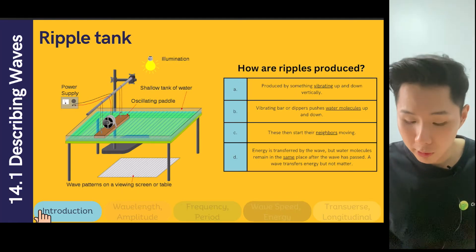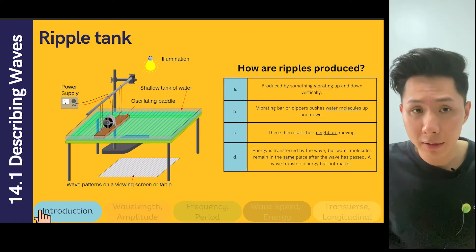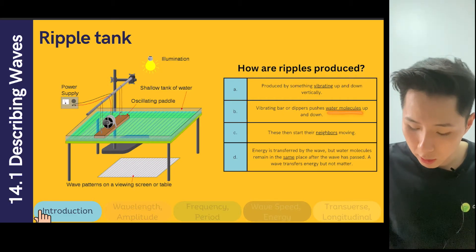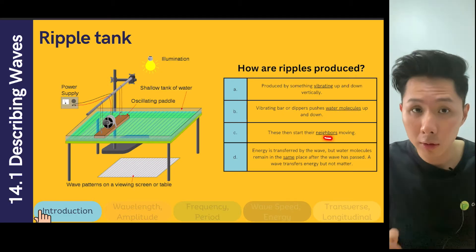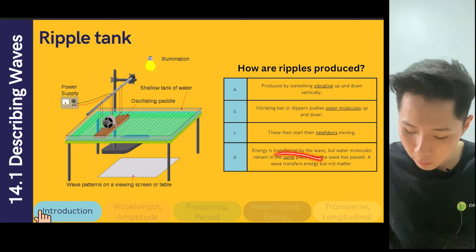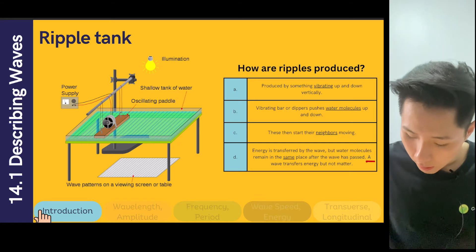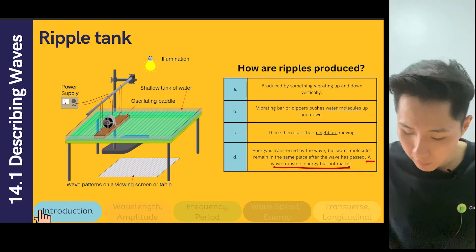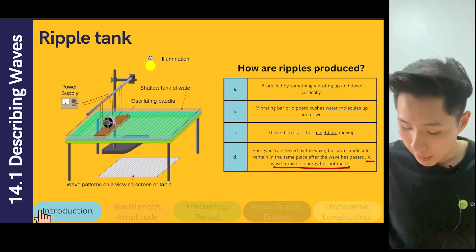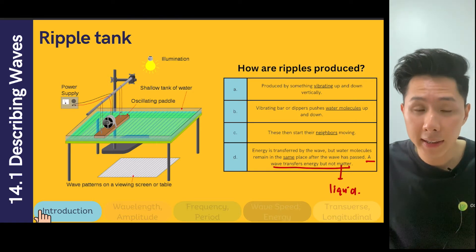How are ripples produced? Ripples are produced by something vibrating up and down. The vibrating bar pushes the water molecules up and down, and when they push the water molecules, they also move their neighbors. So in the process, energy is transferred by the wave, but water molecules remain in the same place. A wave only transfers energy, but not matter. In this case the matter is the liquid — water does not move, what moves is the energy.